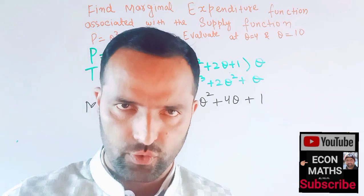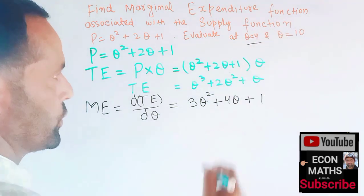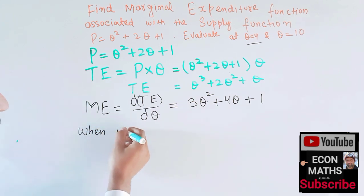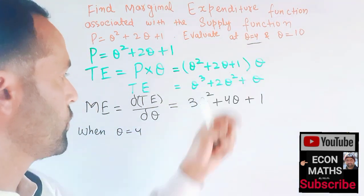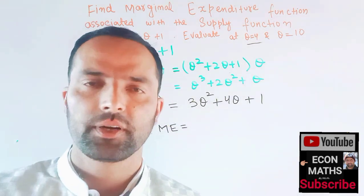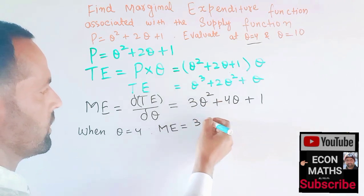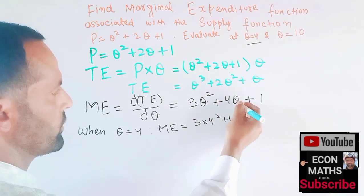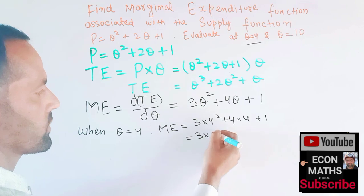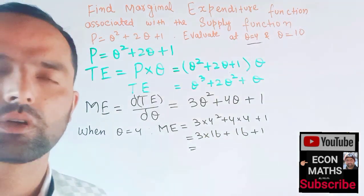Now we need to evaluate this at q = 4 and q = 10. When q = 4, the marginal expenditure is found by plugging the value into the marginal expenditure function: ME = 3(4²) + 4(4) + 1 = 3(16) + 16 + 1.